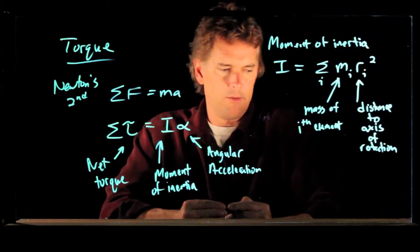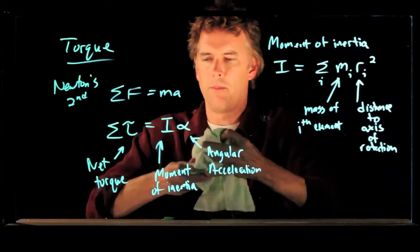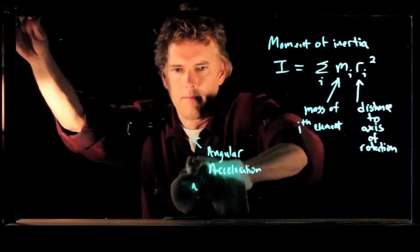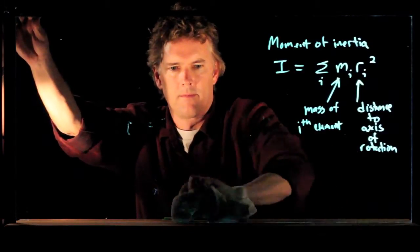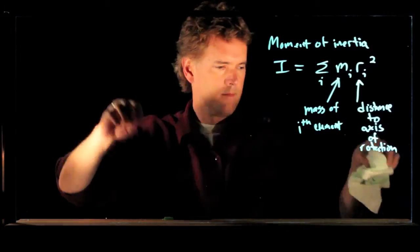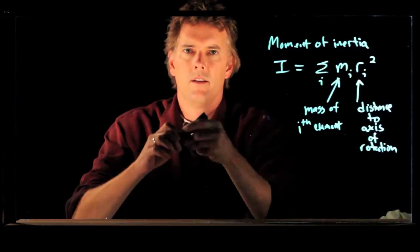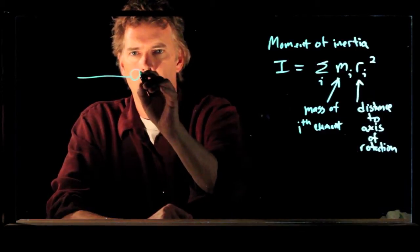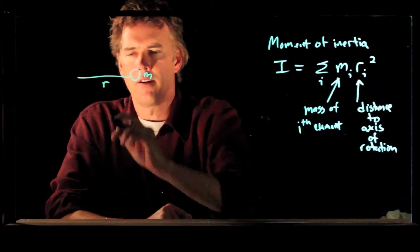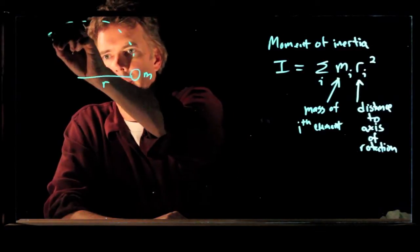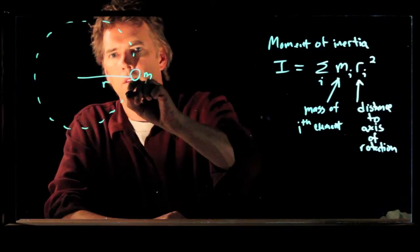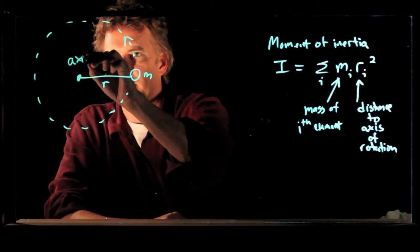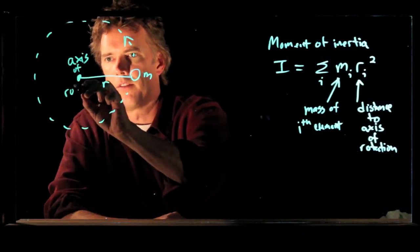So let's try it for a simple example of a mass on a string. So if I have a mass on a string and that mass is m and it's out here at a radius r and this thing is moving in a circle, then this is the axis of rotation, right there at the center.